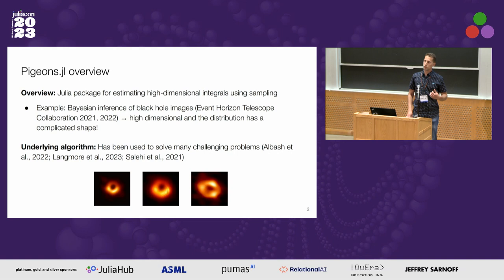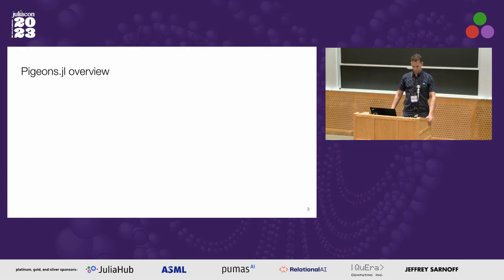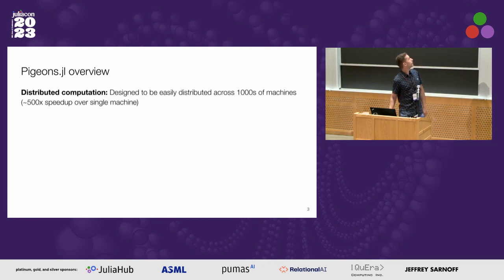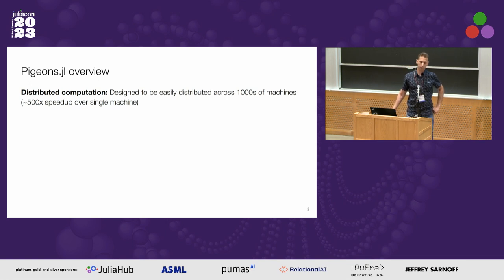The underlying algorithm has been used in various areas of science, including quantum physics, nuclear physics, and so on, and we're excited to make it hopefully accessible to the general user. Pigeons is designed to be easily distributed on up to thousands of MPI communicating machines, and we have seen, for example, an up to 500 times speed-up using 1,000 machines.